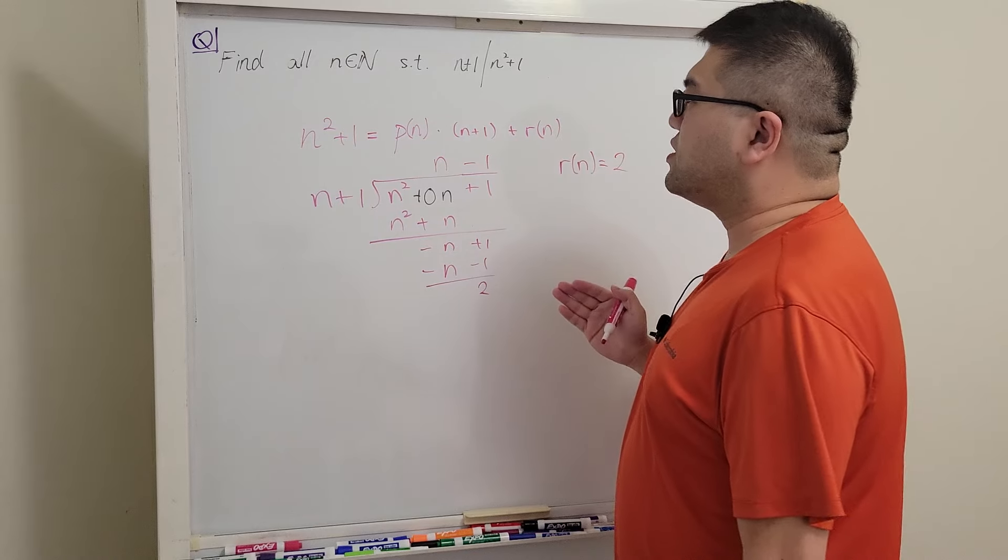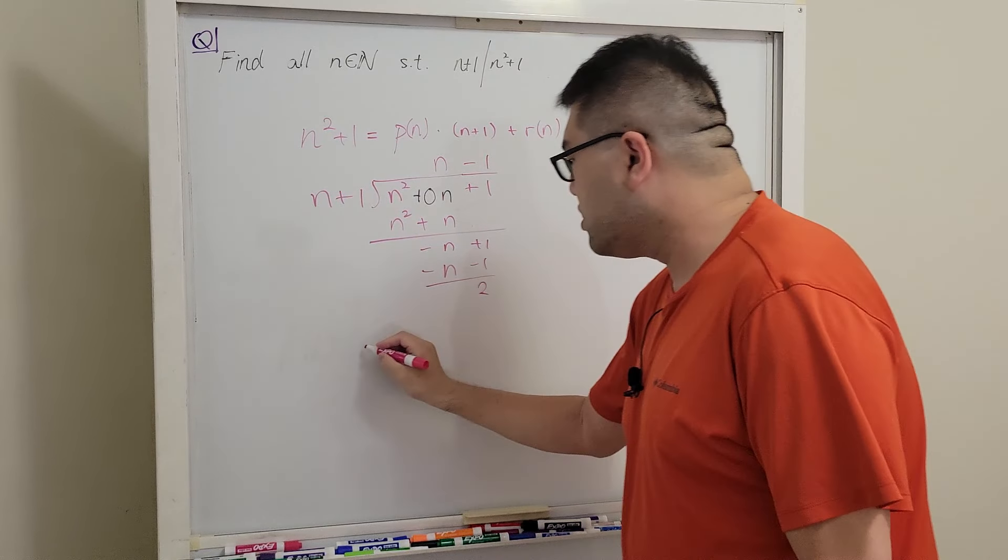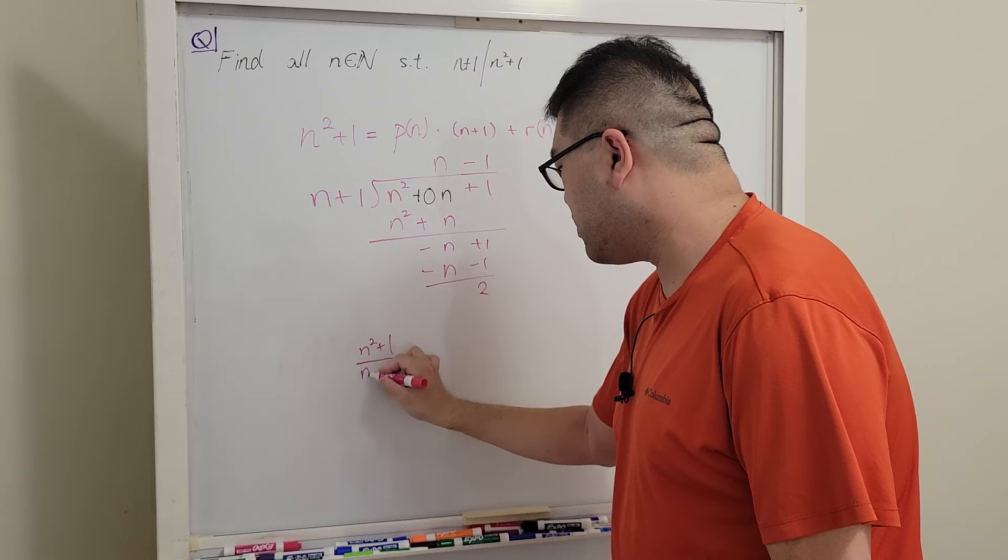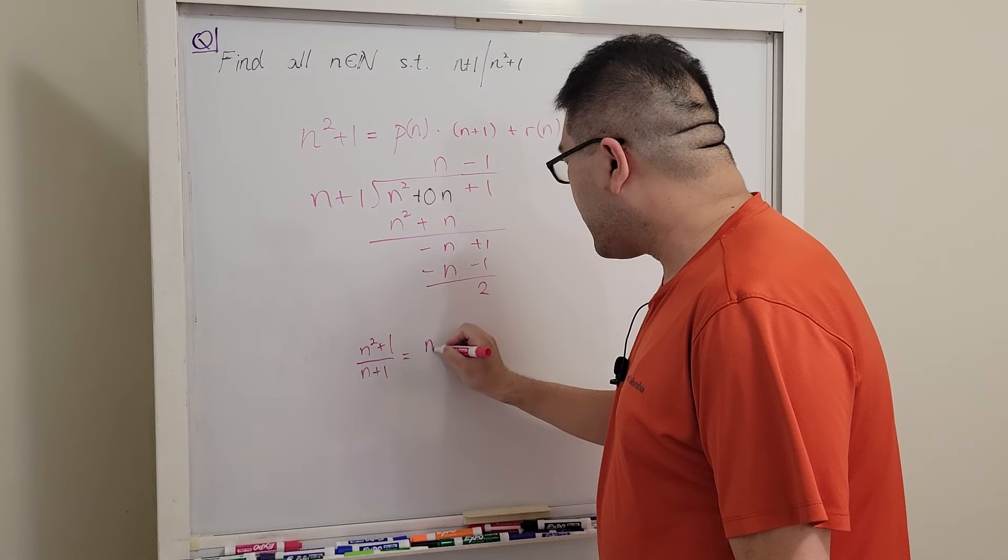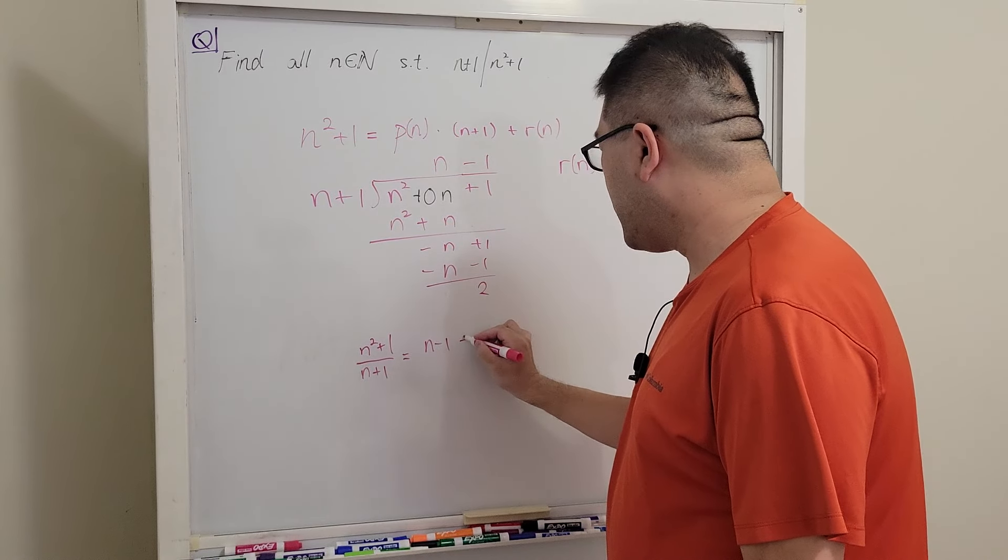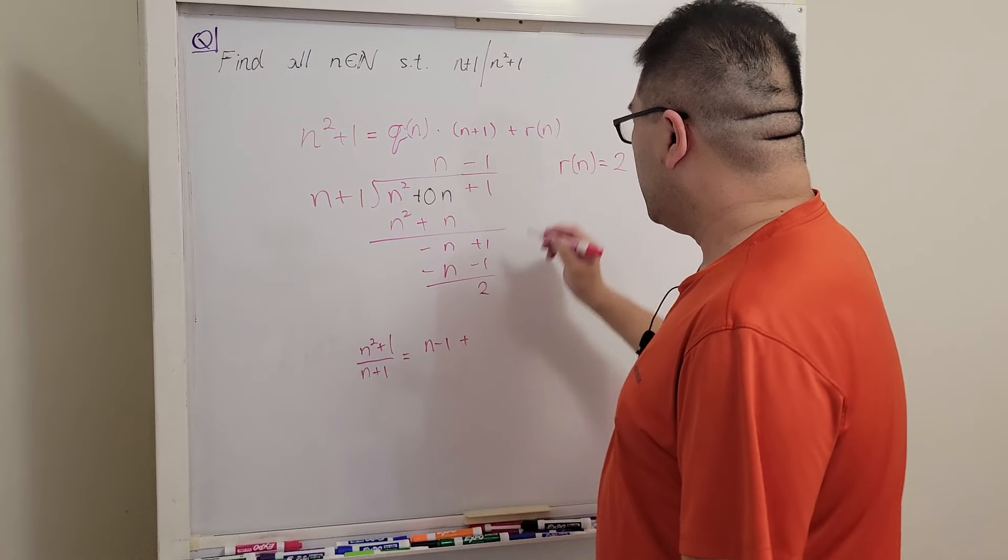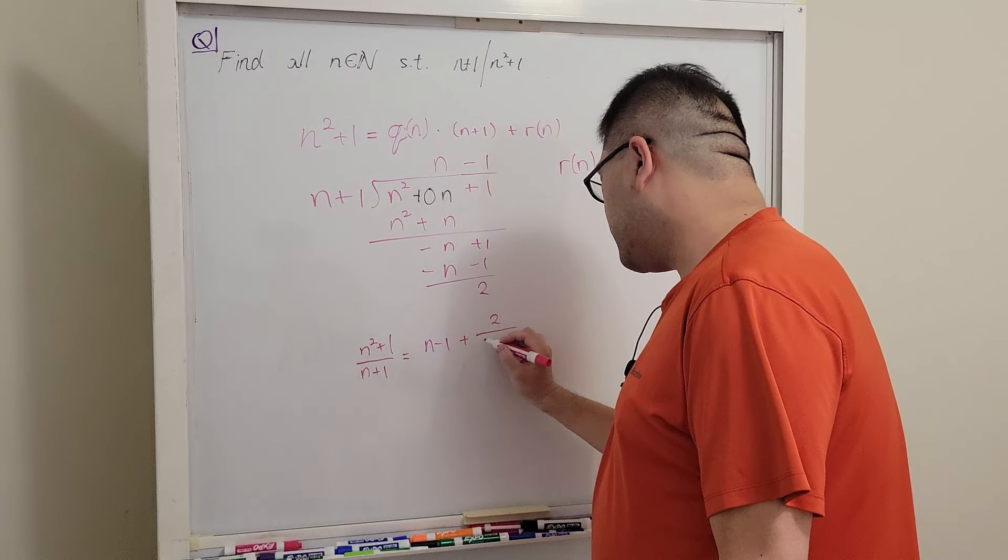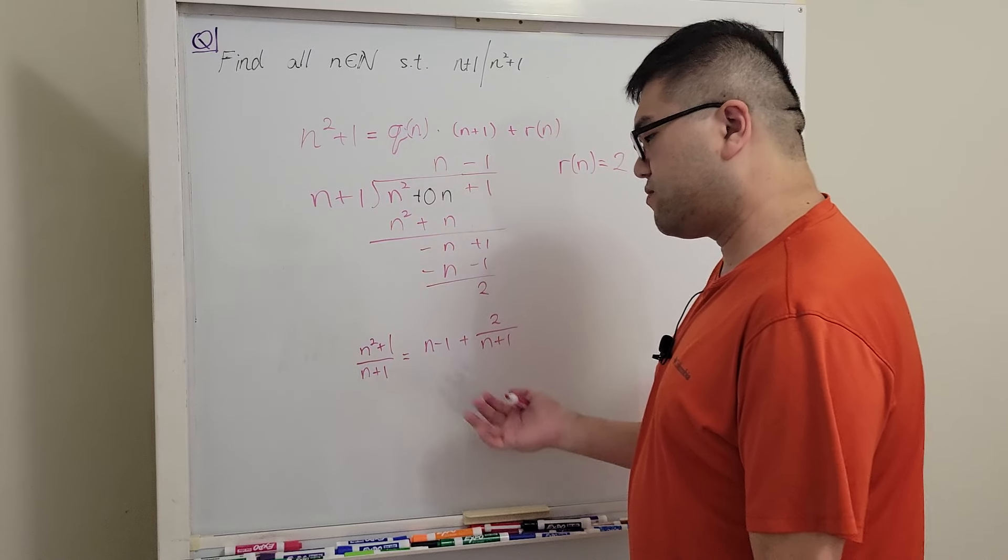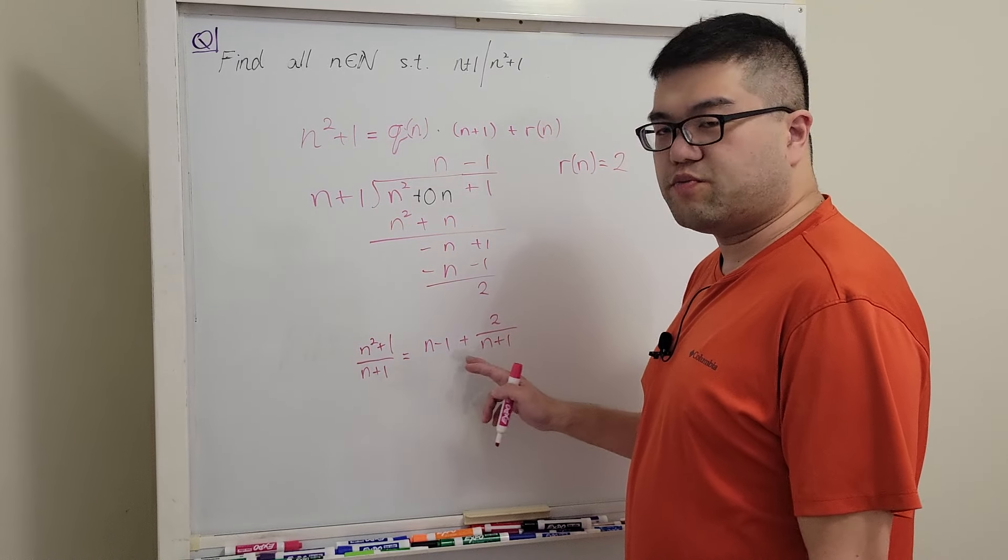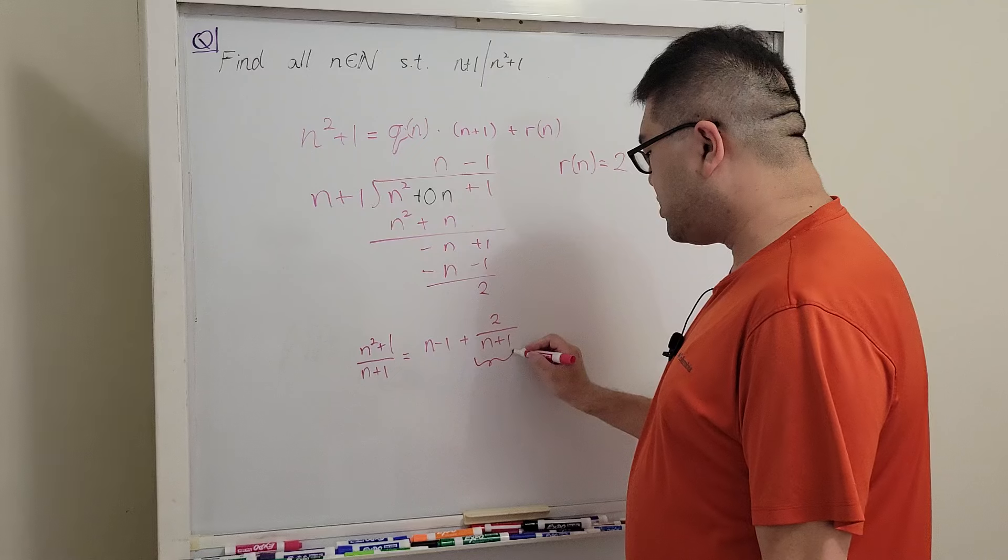But because we want to set this equal to zero, in other words if we try to rewrite this expression as a fraction, we will get n squared plus one over n plus one is equal to the quotient n minus one plus the remainder, which is two over the divisor that we have. And again, we already know that n is a whole number, a positive integer, so n minus one here will still be an integer. Now in order to have the whole result to be an integer, we need the fraction to be an integer as well.